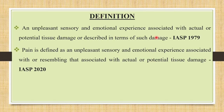Coming to the definition, according to the International Association for the Study of Pain in 1979, they had defined pain as an unpleasant sensory and emotional experience associated with actual or potential tissue damage or described in terms of such damage. Later they revised the definition: pain is defined as an unpleasant sensory and emotional experience associated with or resembling that associated with actual or potential tissue damage.